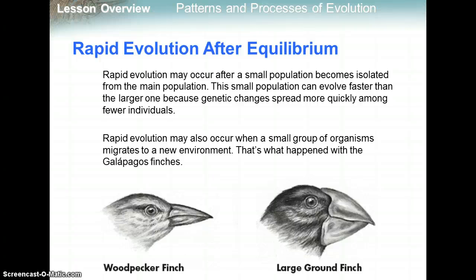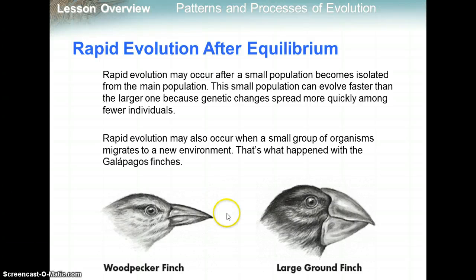Rapid evolution may occur after a small population becomes isolated from the main population. This small population can evolve faster than the larger one because genetic changes spread more quickly among fewer individuals. Rapid evolution may also occur when a small group of organisms migrates to a new environment — that's what happened with the Galapagos finches, also known as Darwin's finches. These finches came from an original finch on a mainland, and on the Galapagos islands, based on the environments and types of seeds available, different finches evolved different beak adaptations, giving rise to many species from one original finch.